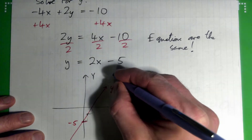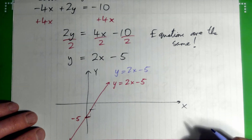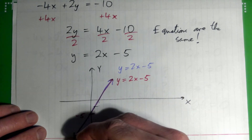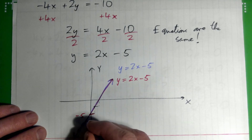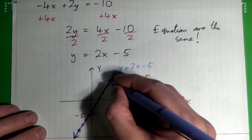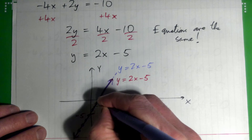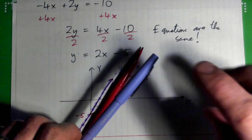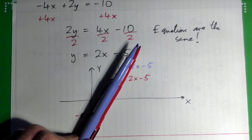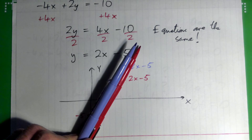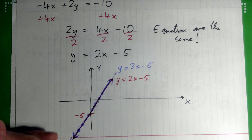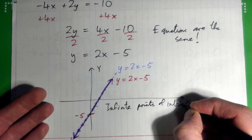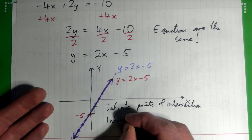If I graph y equals 2x minus 5 in red for the first equation, and then graph y equals 2x minus 5 in purple for the second equation, they're the exact same line on top of each other. So how many points of intersection are there? There's one here, one here, one here — they go on forever, including decimal values in between. That gives us infinite points of intersection, and therefore infinite solutions.